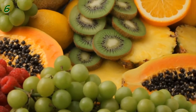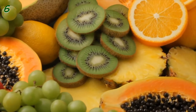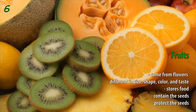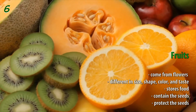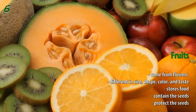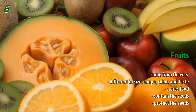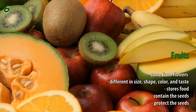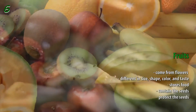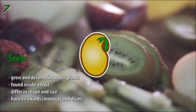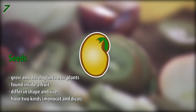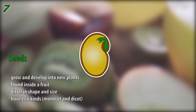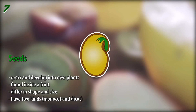Look at the picture. Are you familiar with them? Have you ever eaten them? Fruits come from the flowers of plants. They vary in size, shape, color, and taste. They are important because they not only store food but also carry and protect the seeds. The seeds are the part that grow and develop into new plants. They are found inside a fruit. The fruit protects them. Seeds differ in shape and size.